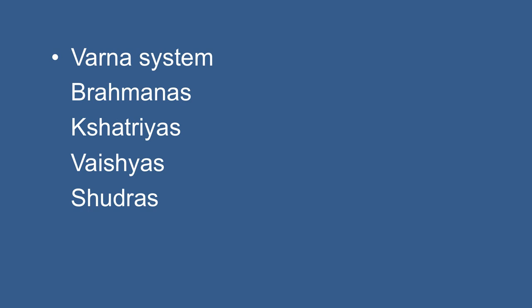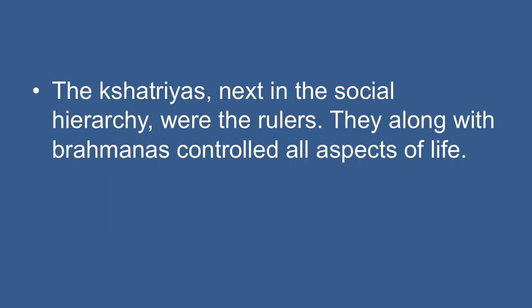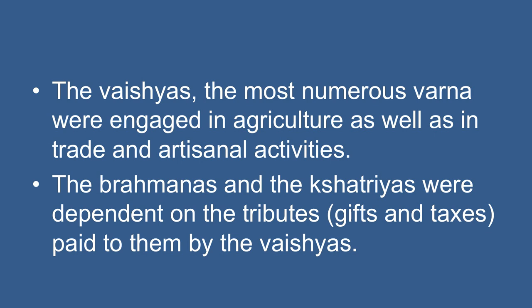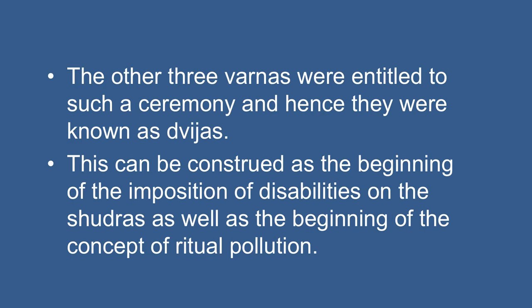The most important change was the rise of social differentiation in the form of the Varna system. The four Varnas into which society came to be divided were the Brahmans, Kshatriyas, Vaishyas, and Shudras. The growing number of sacrifices and rituals made the Brahmans very powerful. The Kshatriyas were the rulers, next in the social hierarchy. The Vaishyas — the most numerous Varna — were engaged in agriculture, trade, and artisanal activities. The Brahmans and Kshatriyas were dependent on tributes paid by the Vaishyas. The Shudras, the fourth Varna, were at the bottom of the social hierarchy, ordained to serve the three upper Varnas and not entitled to the Upanayana ritual — marking the beginning of disabilities on Shudras and the concept of ritual pollution.